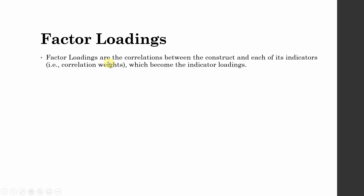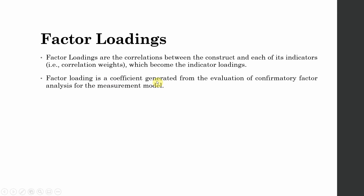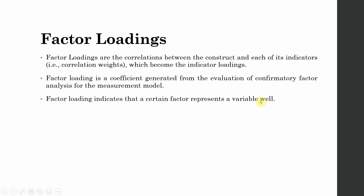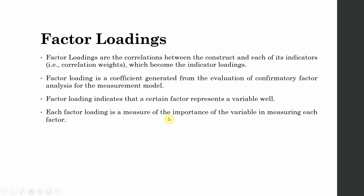Factor loadings are the correlation between the construct and each of its indicators — that is, correlation weights which become the indicator loadings. Factor loading is a coefficient generated from the evaluation of confirmatory factor analysis for the measurement model. Factor loading indicates how well a certain factor represents a variable. Each factor loading is a measure of the importance of the variable in measuring each factor — how well a particular indicator is measuring the underlying factor.